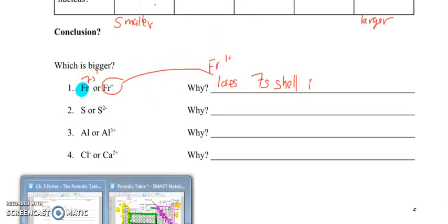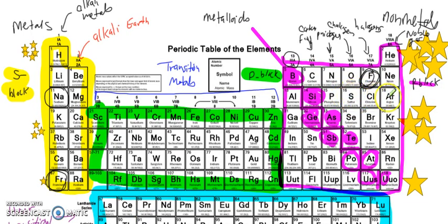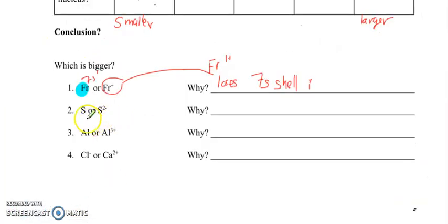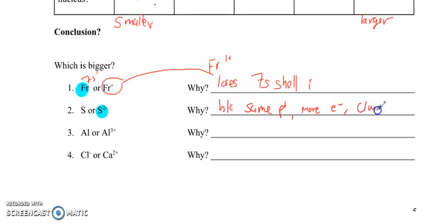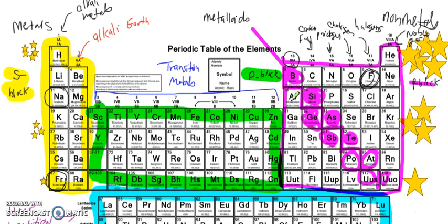Let's look at sulfur versus sulfur 2-. This is an anion — the nonmetal wants to gain two electrons. Sulfur has 16 protons and 16 electrons. Sulfur 2- becomes like a noble gas, like argon — more electrons with the same number of protons. So it will have less nuclear attraction, and the cloud expands. Sulfur 2- will be bigger. Next, let's try aluminum versus aluminum 3+. Aluminum is in the third energy level, but if it loses three electrons, it drops down.